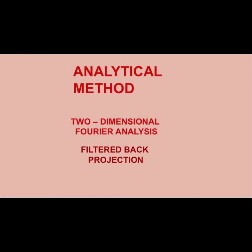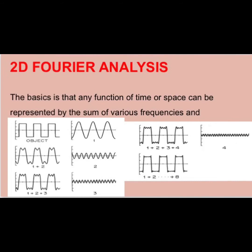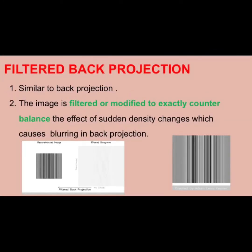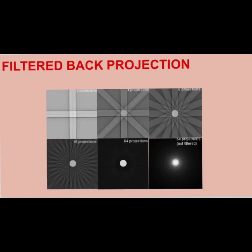Analytical methods include two-dimensional Fourier analysis and filtered back projection. Fourier analysis is based on the principle that any function of time or space can be represented as the sum of various frequencies. Filtered back projection is similar to back projection, but the image is filtered or modified to exactly counterbalance the effect of sudden density changes, which cause blurring in standard back projection.